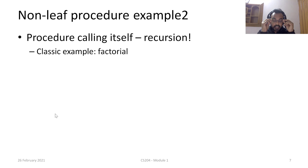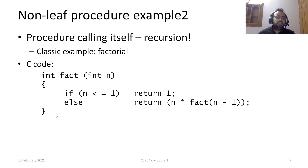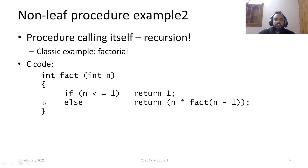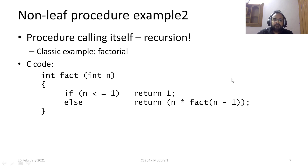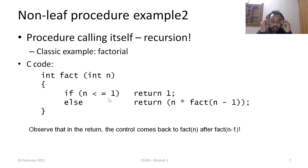Moving on to the second example — recursion. I'll take the popular example of factorial. The C code is simple: we pass N, the number for which factorial needs to be calculated, and the procedure returns the factorial. Inside the function, if the value of N is less than or equal to 1, it returns 1; otherwise it returns N times factorial of N minus 1. The control comes back from fact(N-1) to fact(N) and eventually to the main function.